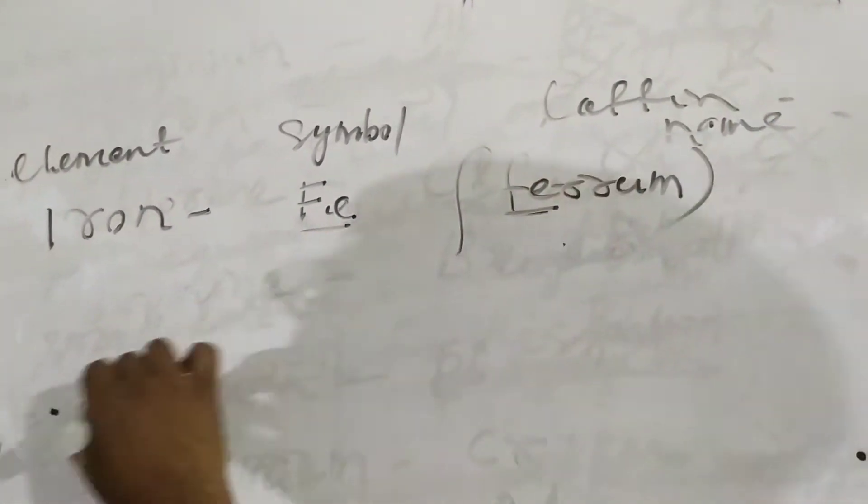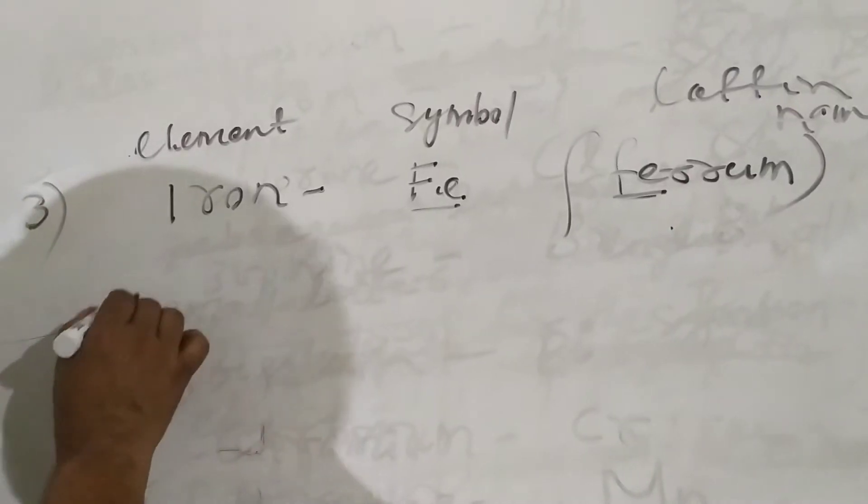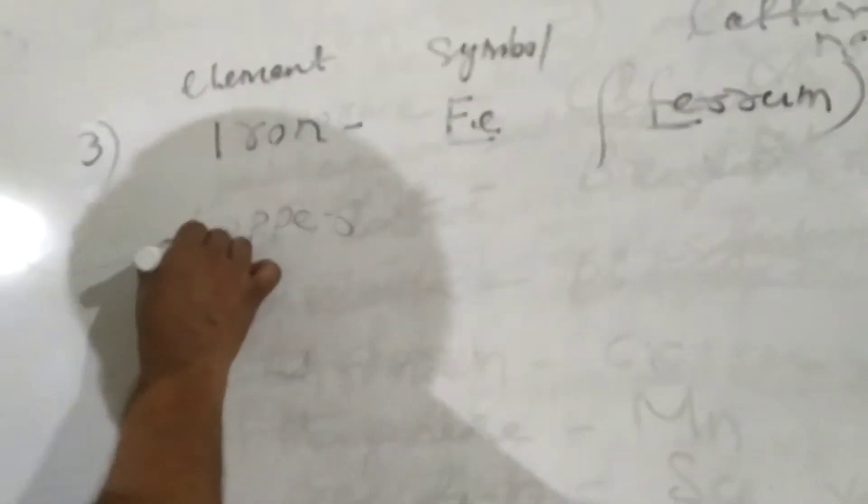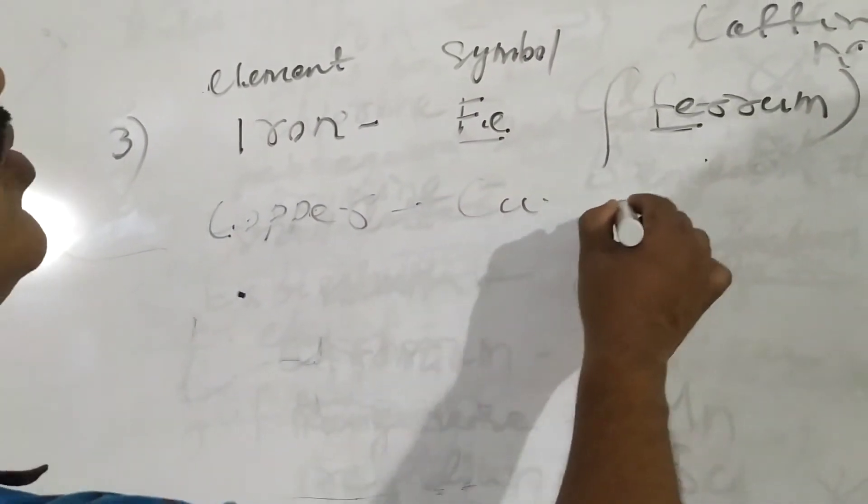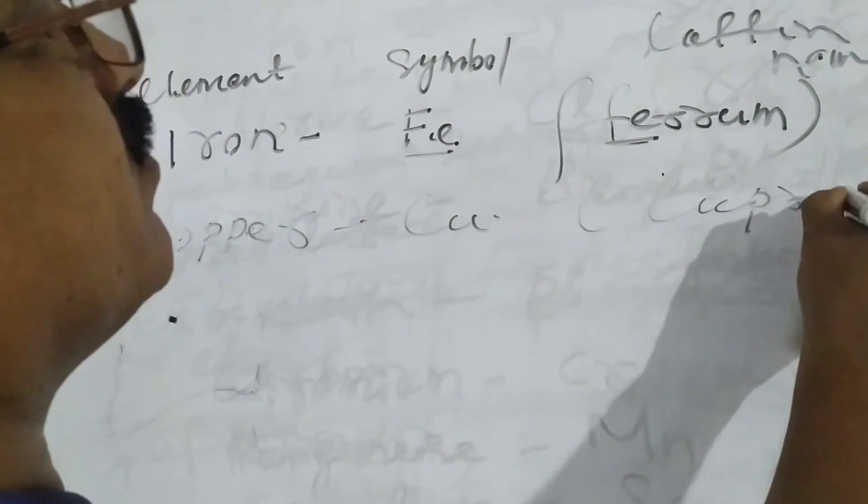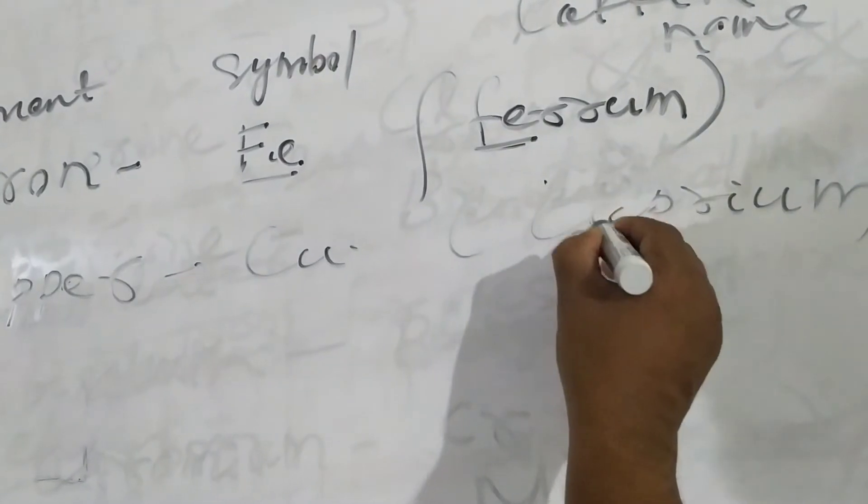So, another is Copper. Copper, symbol is Cu. It is derived from Cuprium. Cu.